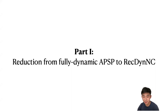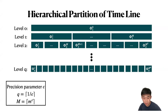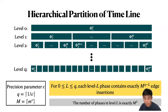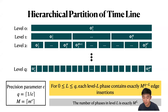I will now describe our reduction from fully dynamic APSP to Rec-DynNC. We use a hierarchical partition of the timeline given a precision parameter epsilon, using two other parameters q and m. There are q levels in our data structure. For every level, we define a different partition of the timeline into phases. Our graph undergoes an online sequence of edge insertions and deletions; to define phases on each level, let's ignore edge insertions for now. For each level L, we ensure that each level-L phase contains exactly m^{q-L} edge insertions, so the number of phases at level L is exactly m^L.